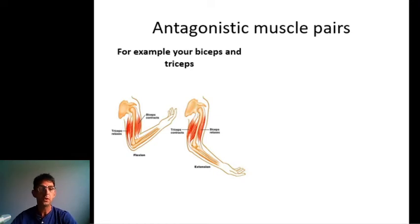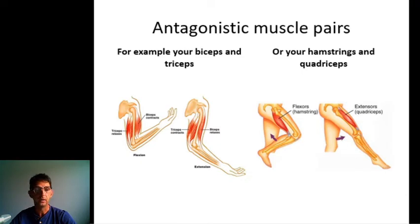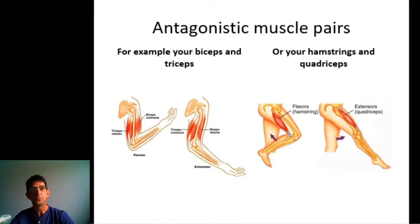Antagonistic muscle pairs also exist in your legs. Your hamstrings at the back of your leg bend your leg. But also the quadriceps at the front of your legs, to stretch your leg.